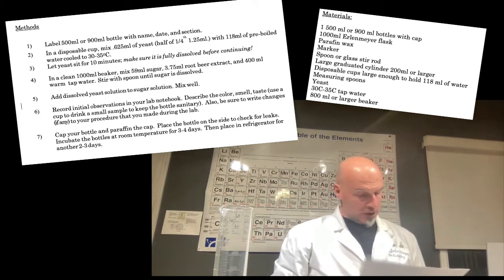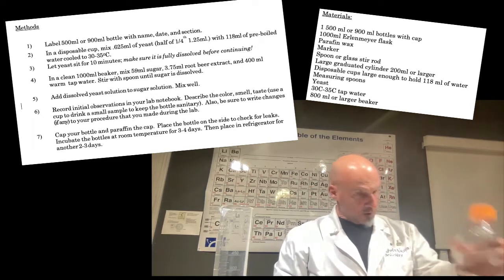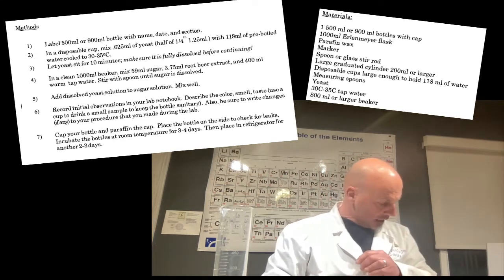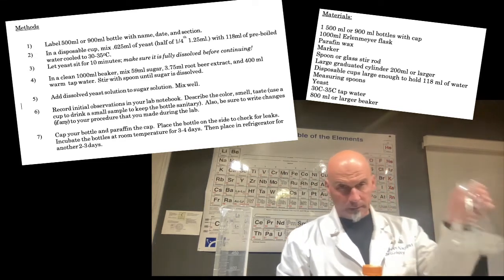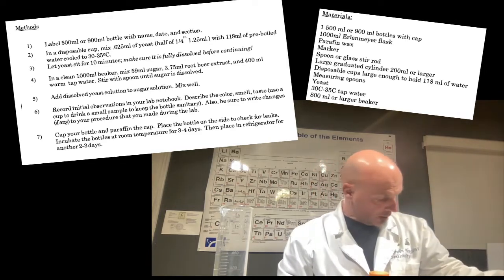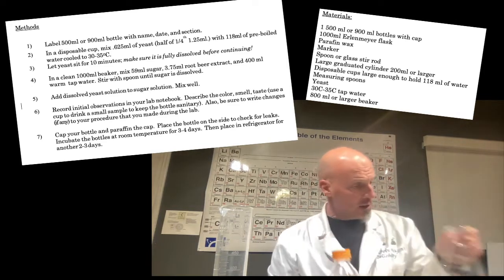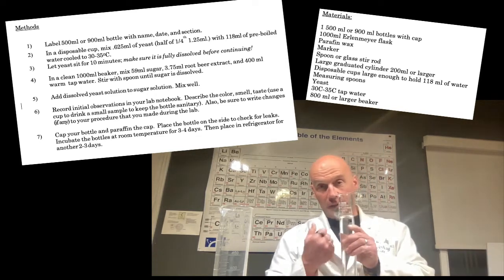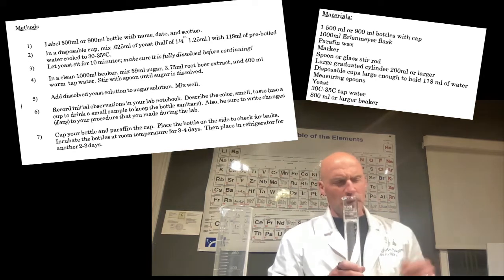Alright, so let's go ahead and get started. The materials we need: we need one 500 or 900 milliliter bottle with cap, a large graduated cylinder about 1000 milliliters. Sorry, this would be an Erlenmeyer flask, let's go ahead and talk about the graduated cylinder. This, in fact, is a graduated cylinder, so yeah, let's go ahead and get this straight.